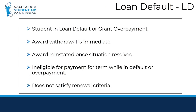LD — Loan Default. You will use the LD code to report when a student is in loan default or grant repayment. The award withdrawal is immediate. The student's award can be reinstated once the loan default or grant overpayment situation has been resolved. The student will be ineligible for payment of the terms in which they are in either situation. This code does not satisfy the renewal criteria.